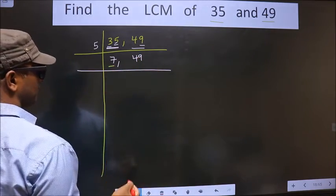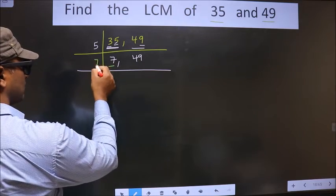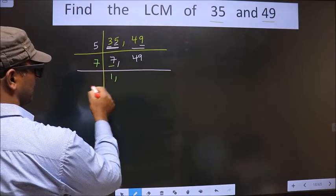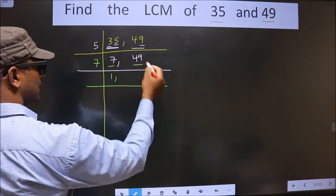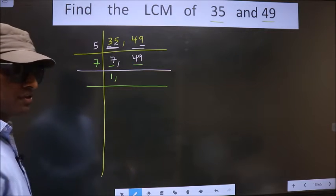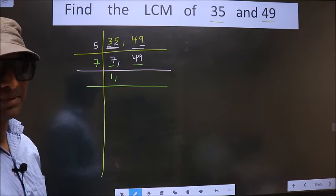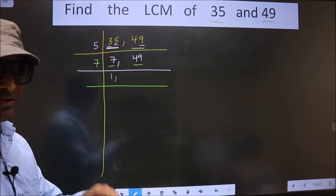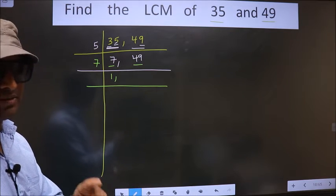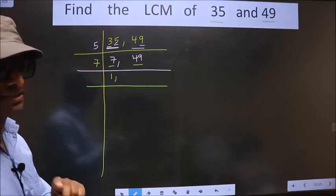Now here we have 7. 7 is a prime number, so we take 7 once. The other number is 49. You always remember 7 square is 49, that is 7 into 7 is 49. Remember this.